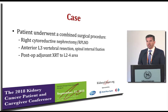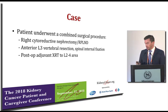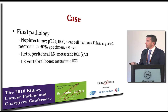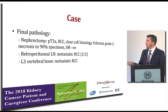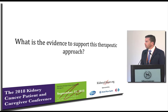A discussion point afterwards is whether there's a role for medical therapy in these patients. The pathology showed this was kidney cancer of a fairly aggressive type — high grade, which tells you how aggressive the cancer ultimately is. The margins were clean, lymph nodes were all positive at resection, and the bone area clearly was a metastasis as well. So what is the evidence to support this approach? Let's discuss that.